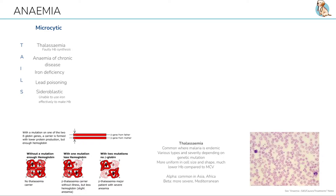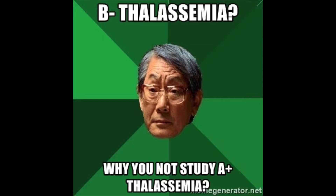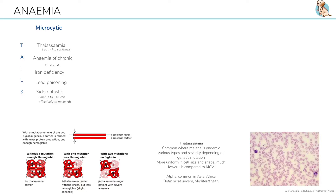There are varying types, but broadly, alpha thalassemia trait is less severe, and the buzzword you'll see in exams is Asian and African backgrounds — just remember A for Asia or Africa. Beta thalassemias are more severe; some forms are incompatible with life, and the buzzword you'll hear is Mediterranean or Greek origins.